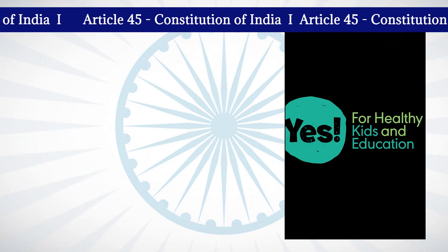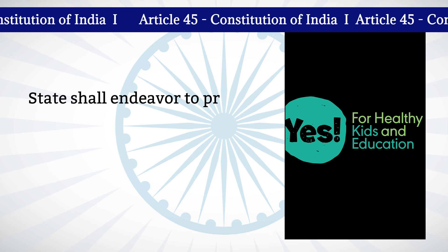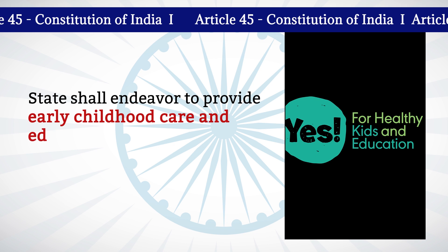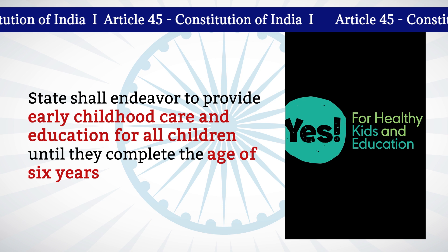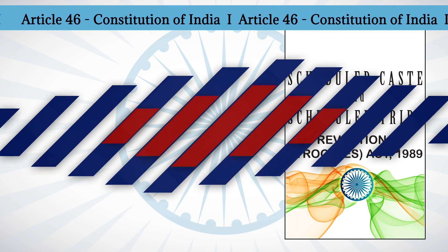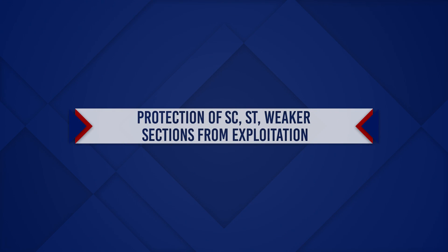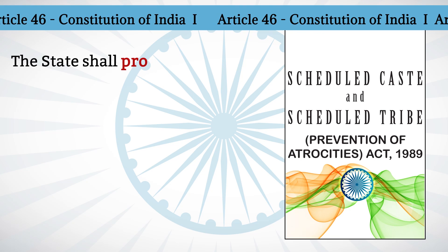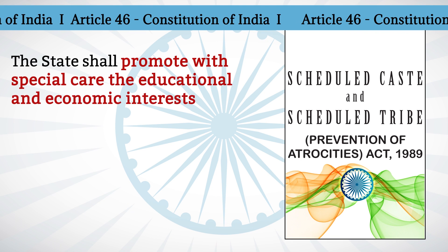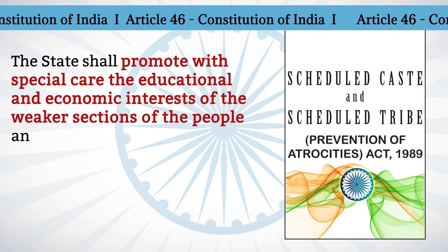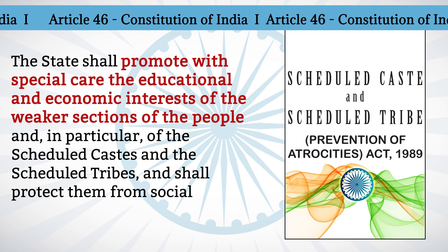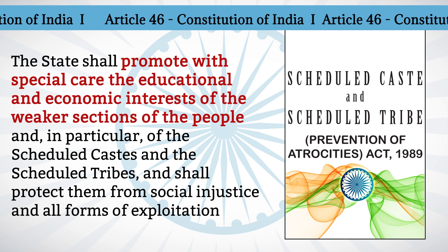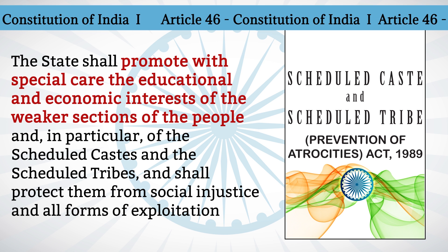Article 45 says that the state shall endeavor to provide early childhood care and education for all children until they complete the age of 6 years. Article 46 says that the state shall promote with special care the educational and economic interest of the weaker sections of the people, and in particular of the scheduled castes and the scheduled tribes, and shall protect them from social injustice and from all forms of exploitation.